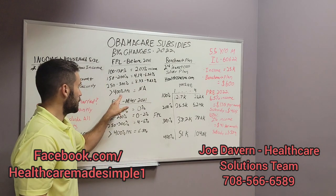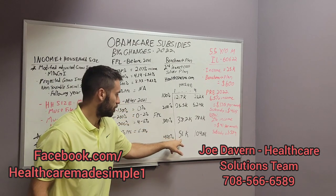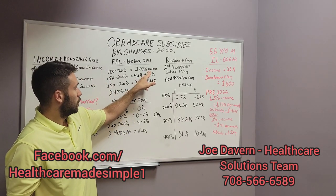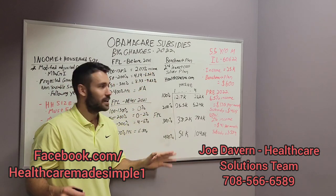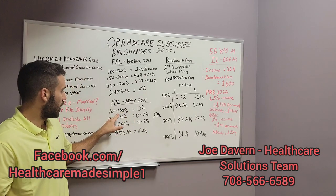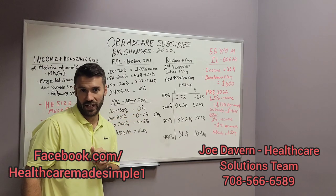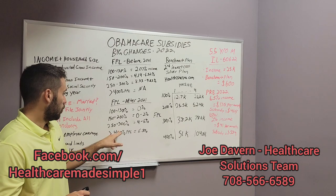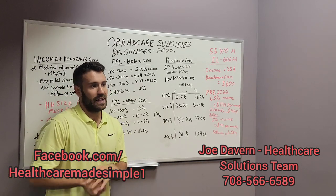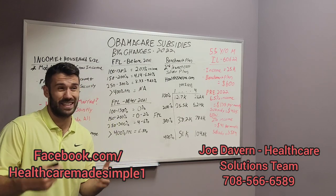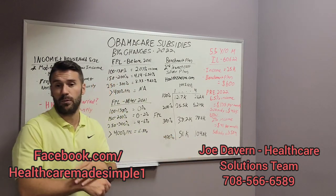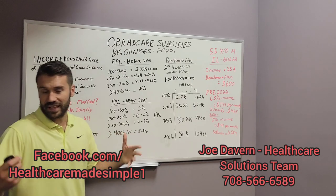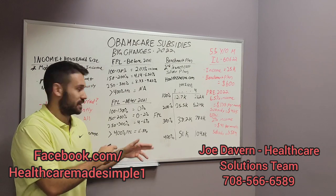The people that really got hurt by Obamacare were the ones making over 400% federal poverty. If you were a single making $51,000, you would qualify for no government assistance in your subsidy. Now notice how it's changed for 2022 moving forward. If you make 100% to 138% federal poverty, you'll pay 0% for your health insurance. And if you make over 400% federal poverty level — this is the biggest change — it's now capped at 8.5% of your income for that benchmark plan.